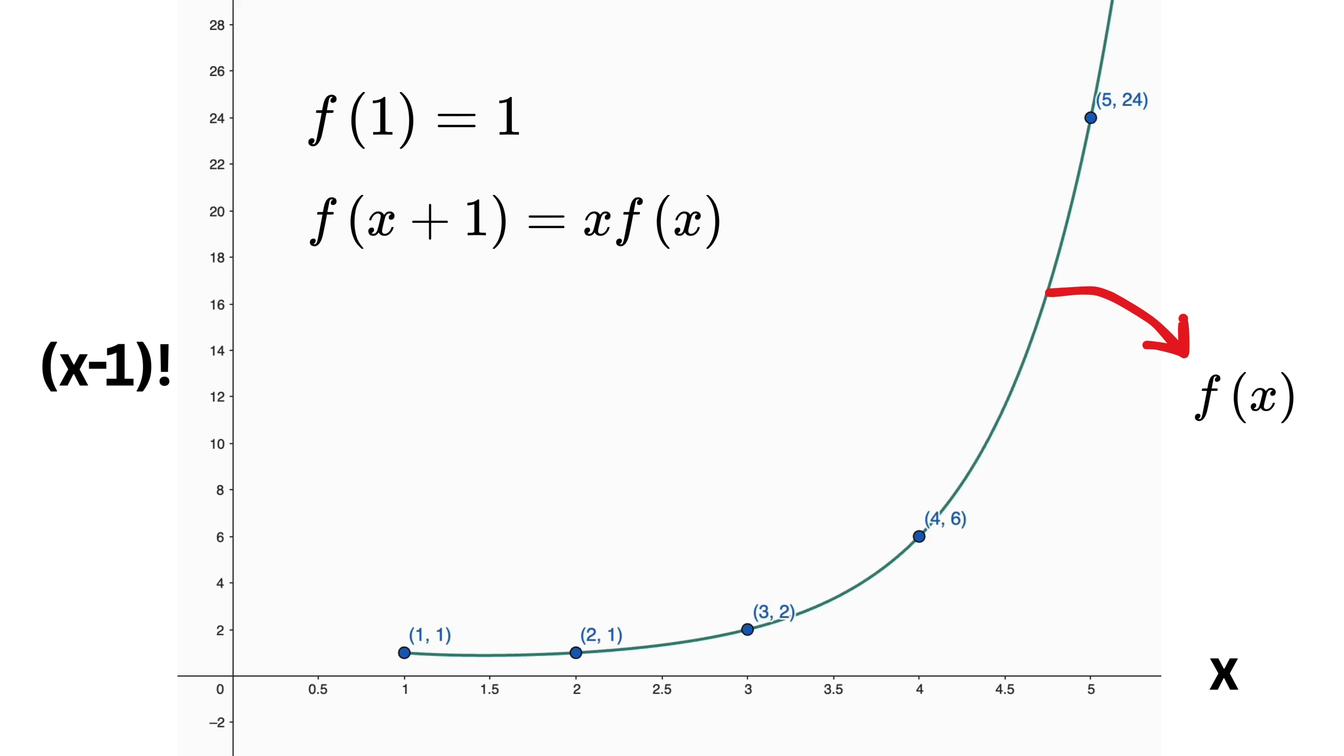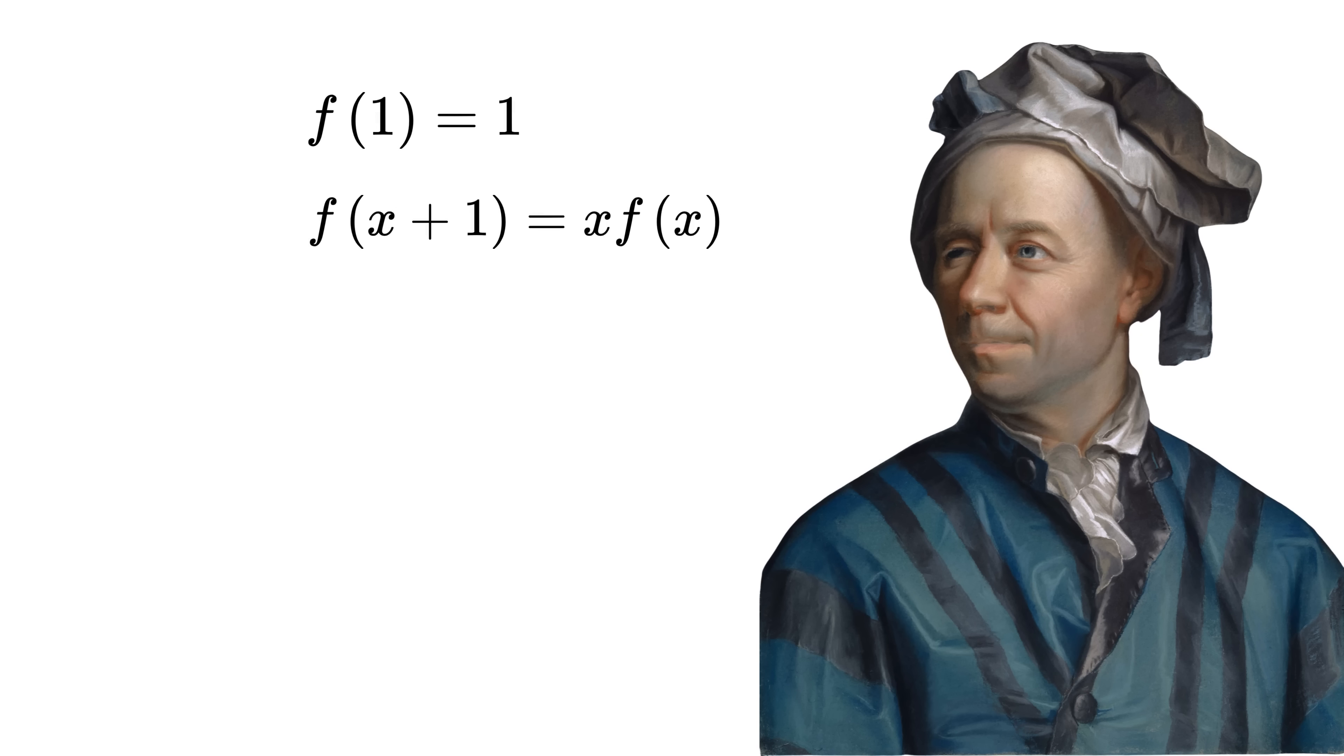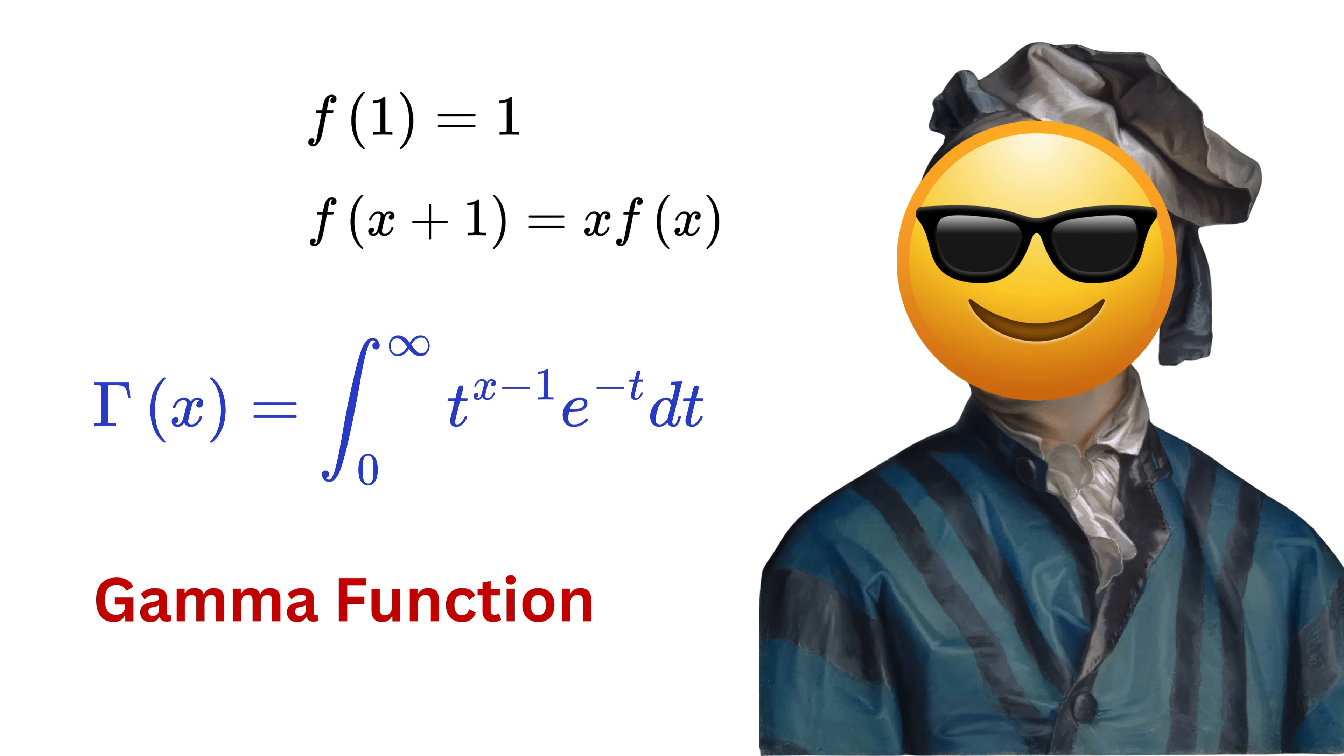After experimenting and playing around with infinite products and integrals, Euler came up with a function that beautifully satisfied all of this, and that later came to be known as the gamma function. Oh man, Euler was just on another level.